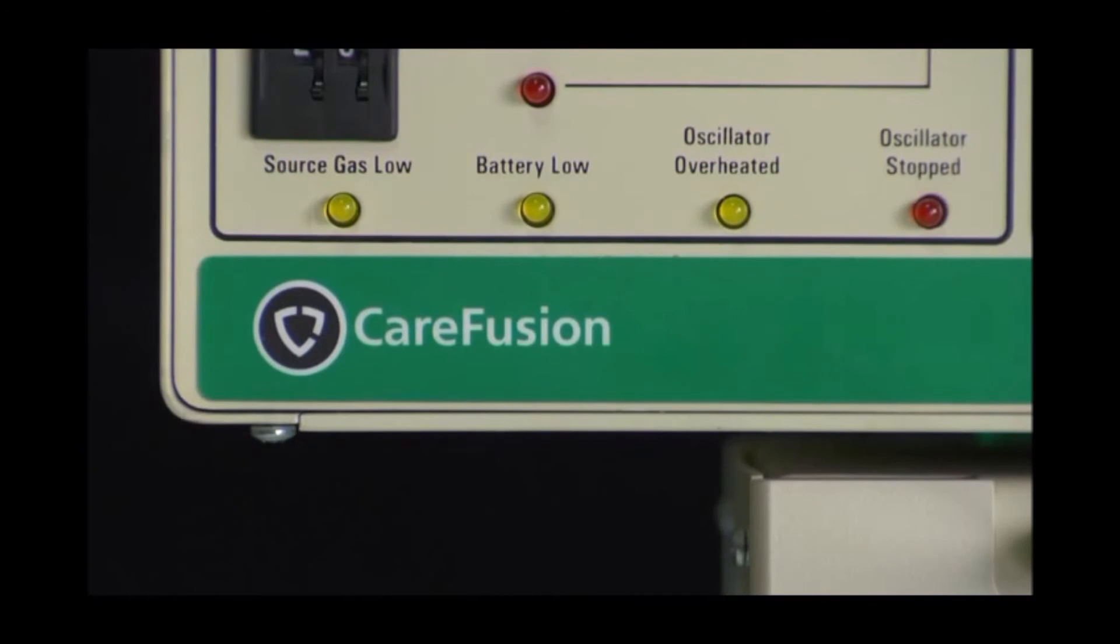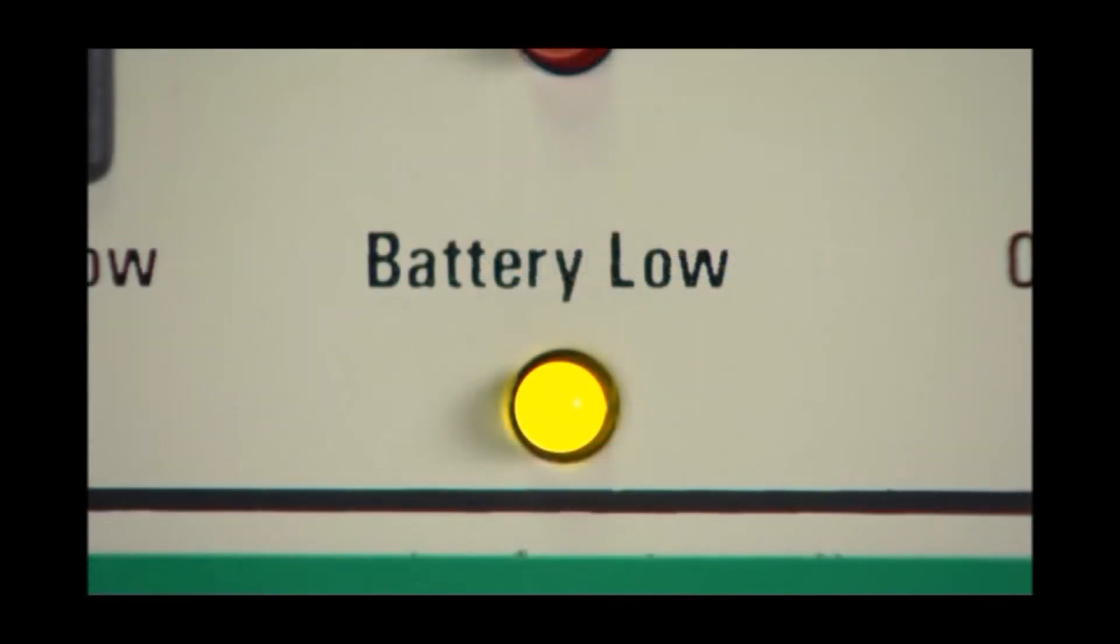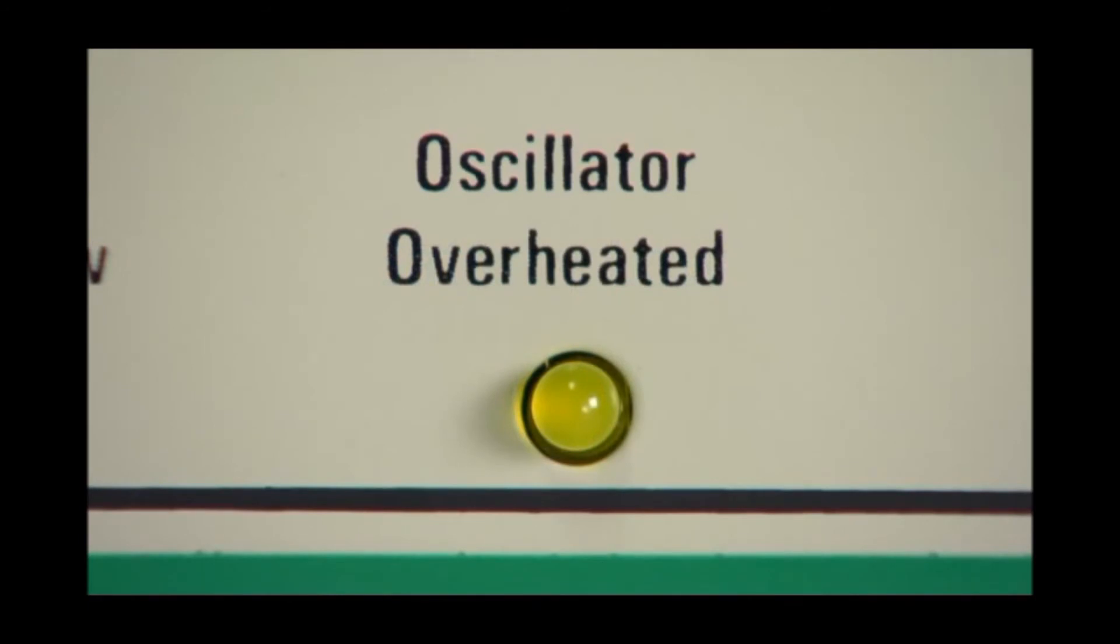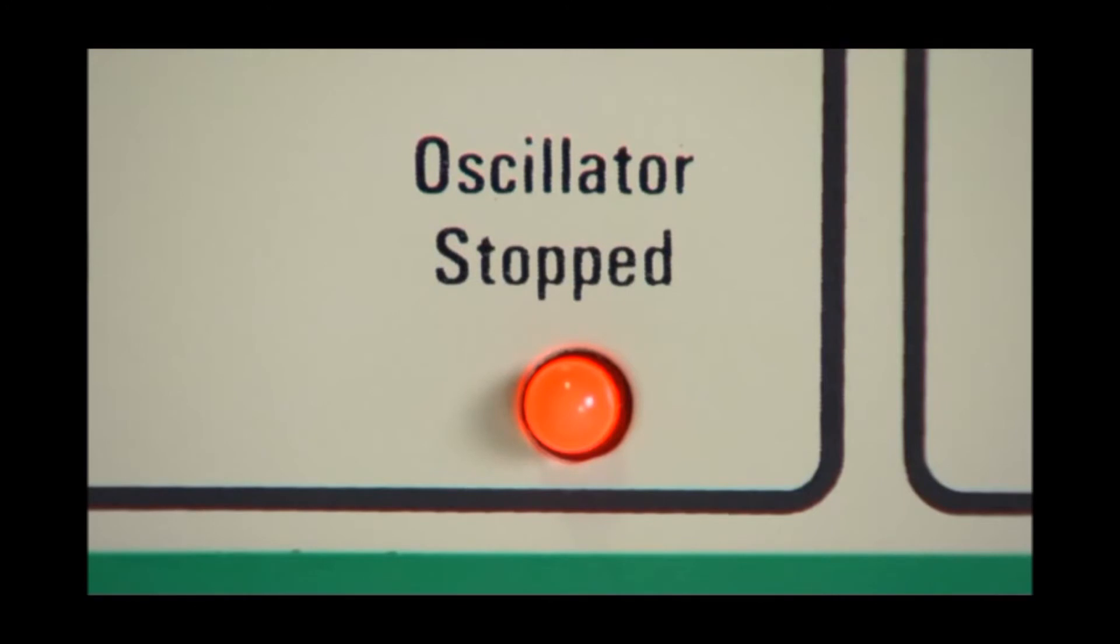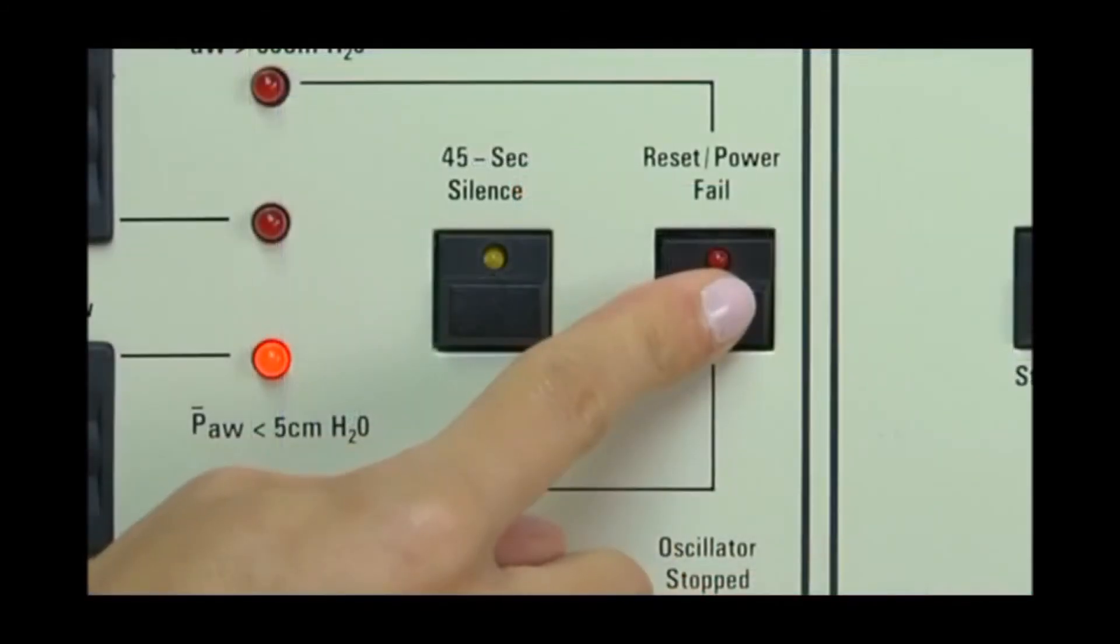These three yellow LEDs are caution indicators with no accompanying audible alarm. This LED indicates a low source gas condition of less than 30 PSI for either of the high pressure gas inlets. The battery low LED means that the power failure alarm battery located in the rear panel of the ventilator must be changed. The oscillator overheated LED signals that the internal oscillator coil temperature has reached approximately 150 degrees Celsius. The oscillator stopped indicator means that the oscillator system is enabled, but the amplitude is less than or equal to 7 cm of water pressure. An audible tone will accompany this red indicator and will automatically reset once the alarm condition no longer exists.